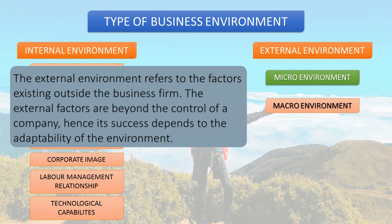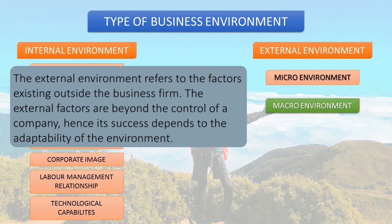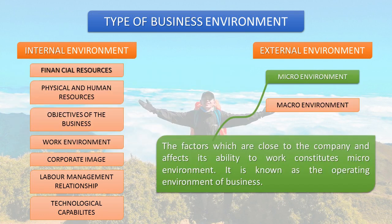External environment is divided into two parts: micro environment and macro environment. Micro environment refers to factors that are close to the company and affect its ability to work — this constitutes the operating environment of business. When competing firms in the industry have the same micro elements, the success of the firm depends on their relative effectiveness in dealing with these elements.